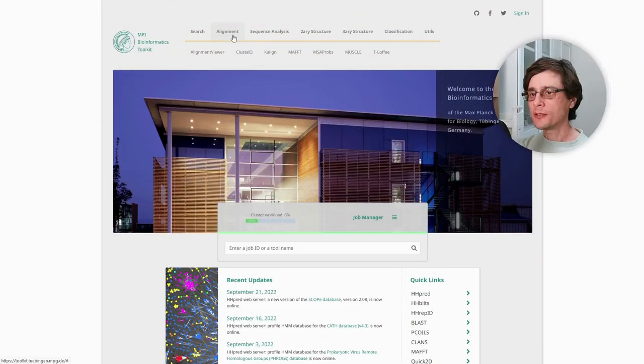The MPI Bioinformatics Toolkit includes several multiple sequence alignment programs through an easy-to-use web interface. From the Alignment tab, we can navigate to the different programs. We will demonstrate how to use Clustal Omega, and the use of the other programs is fairly similar.